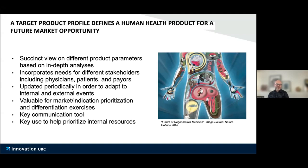The TPP also incorporates regulatory requirements and what you're actually able to measure. They're updated periodically — in a big pharmaceutical company, anywhere from quarterly to annually. They're major events where 15 to 20 people attend and each stakeholder defends what they've put into the target product profile and what it means from an ultimate commercialization potential standpoint. It's really important for market and indication prioritization.